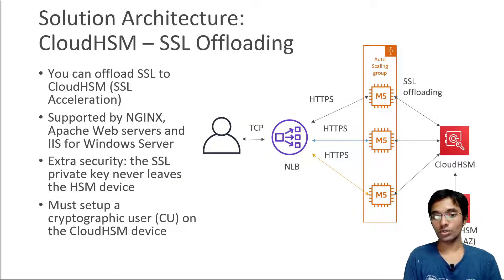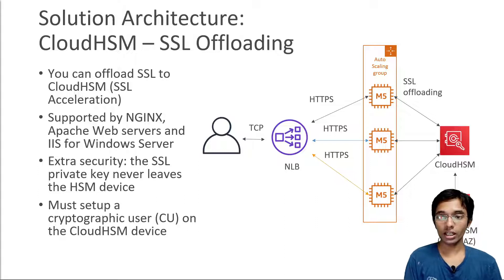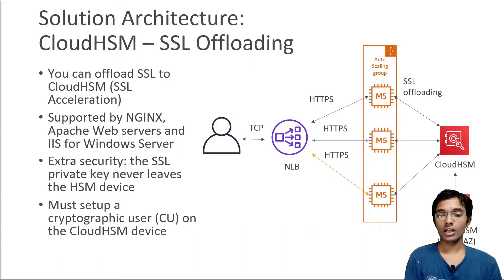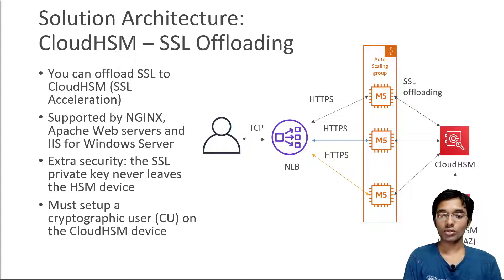Something you can do in this case is use CloudHSM to do SSL offloading. We have the same architecture: the user talks to the NLB (Network Load Balancer), which forwards TCP traffic to the EC2 instances, which perform HTTPS. To perform the actual SSL encryption, you can offload it to CloudHSM using SSL acceleration — this is supported by NGINX, Apache web servers, and IIS for Windows Server. The CloudHSM device in the backend will be the one performing the SSL acceleration or offloading for your EC2 instances, saving up valuable CPU resources.